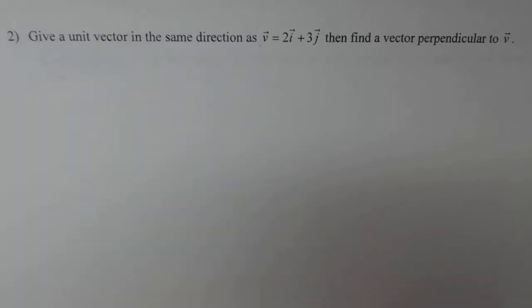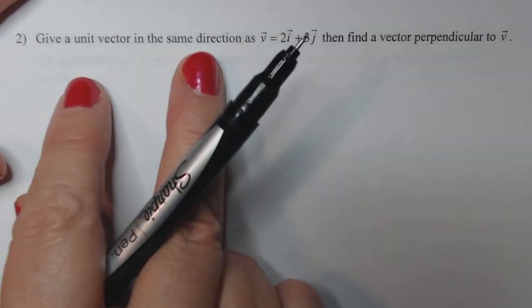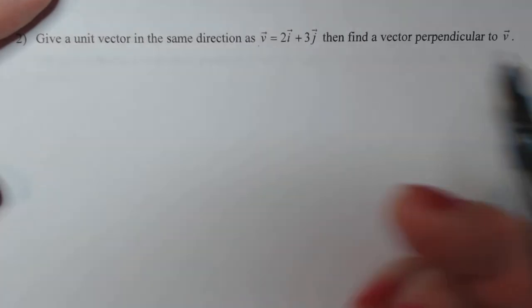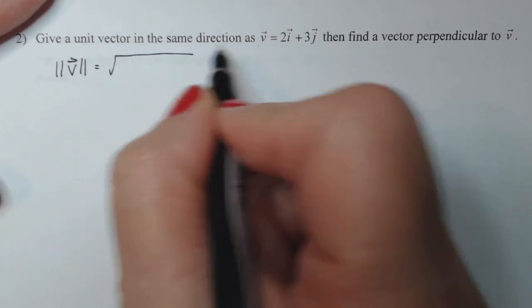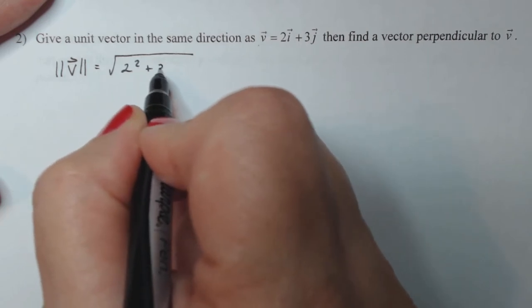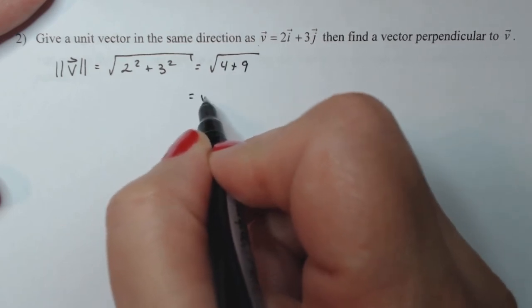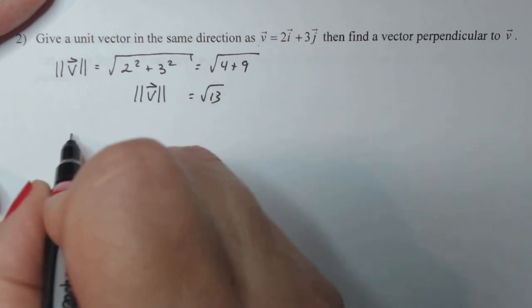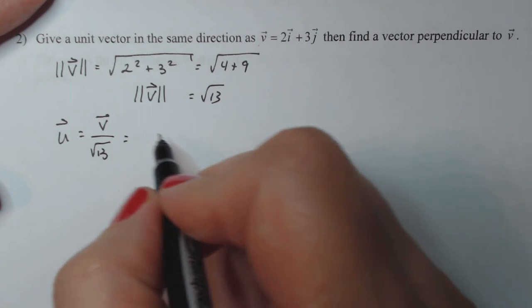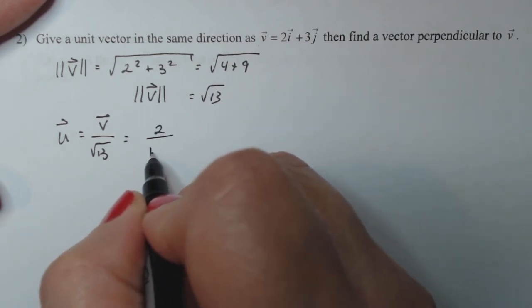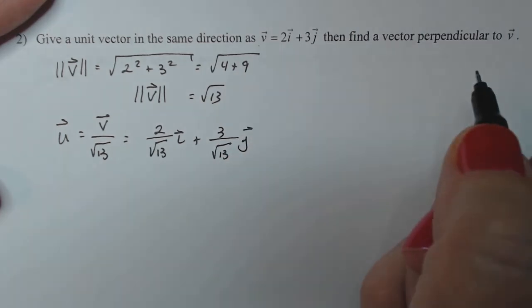So we want to give a unit vector in the same direction as this vector, then find a vector perpendicular to V. So a unit vector first, that's something from the previous section. A unit vector requires me to have the magnitude of V. So that's going to be equal to each of those guys squared, so 2 squared plus 3 squared square root. That's going to give me square root of 4 plus 9, square root of 13. And the unit vector will always be the vector V divided by the square root of 13. So I'm going to take each of these components and divide it by square root of 13, so 2 over square root of 13 i plus 3 over square root of 13 j.